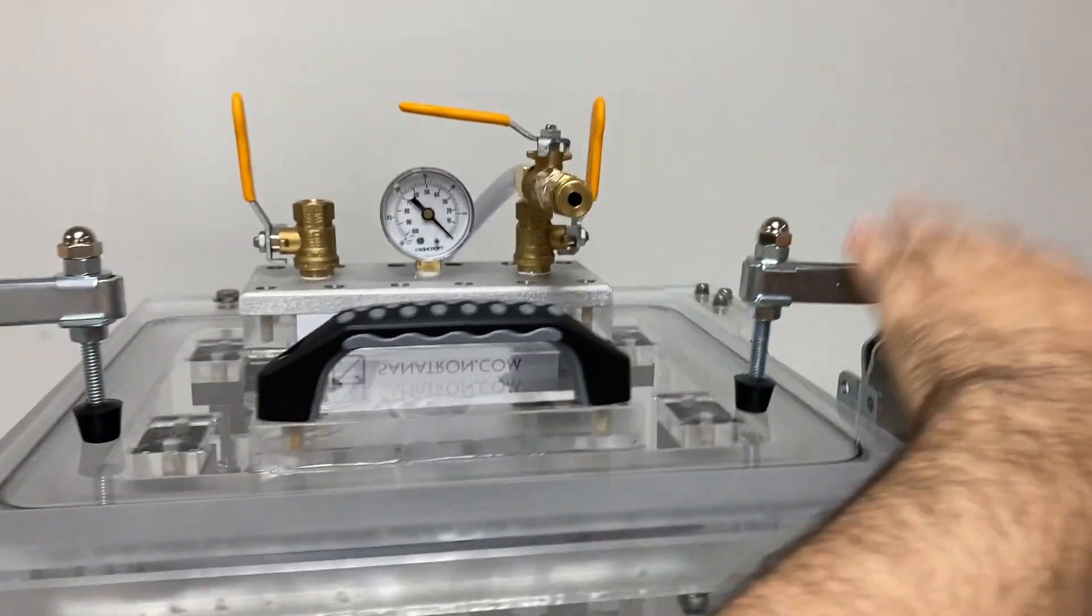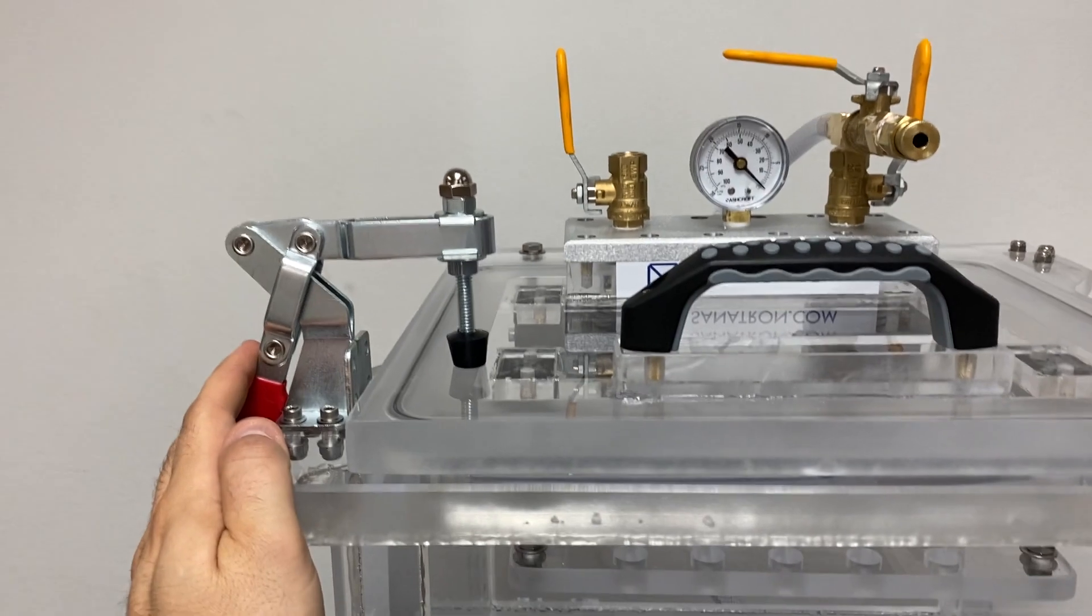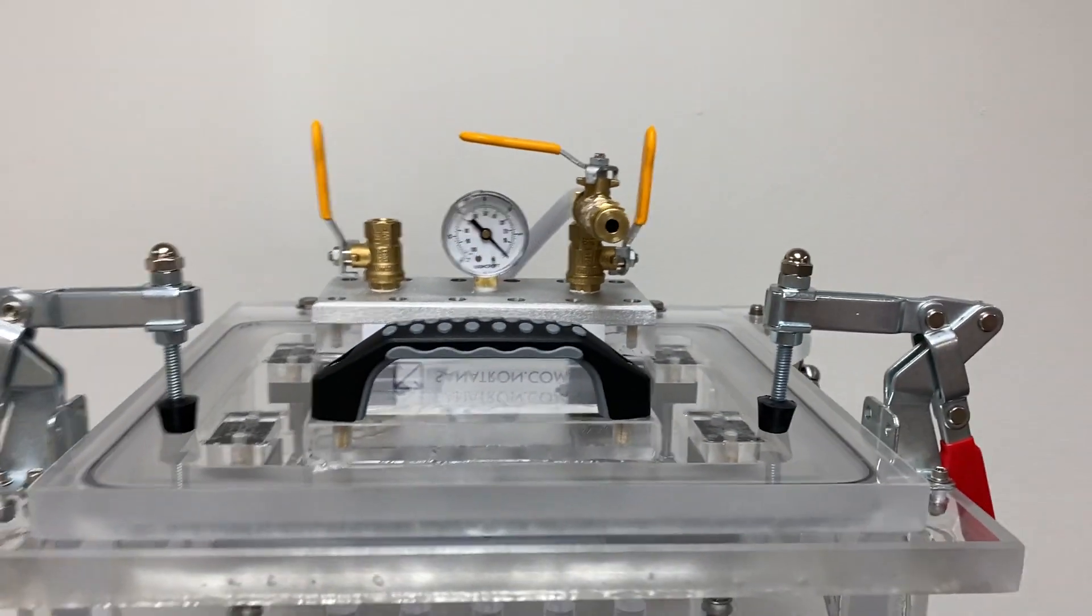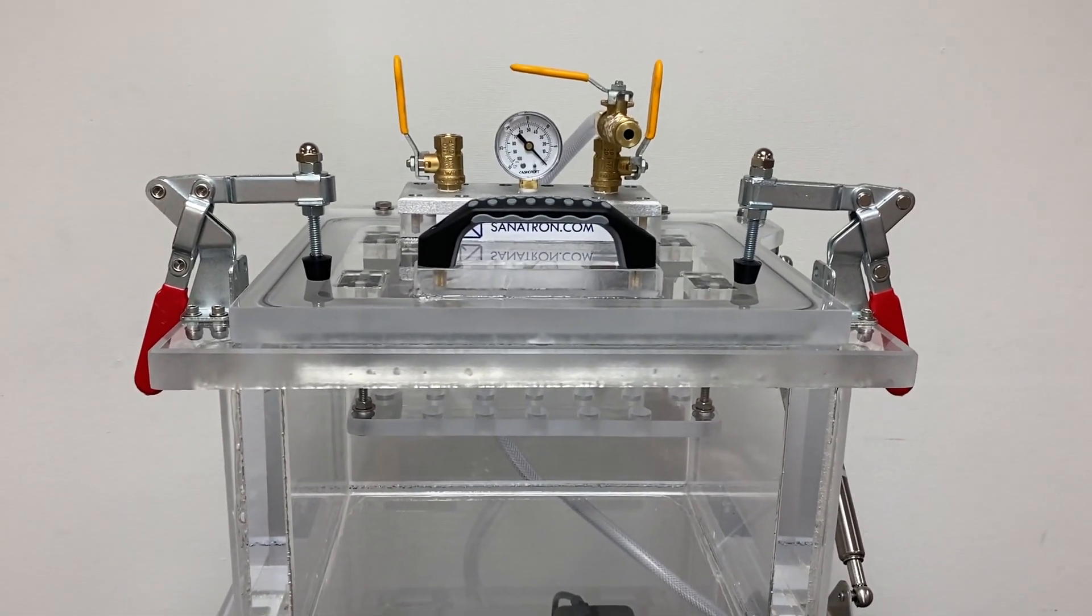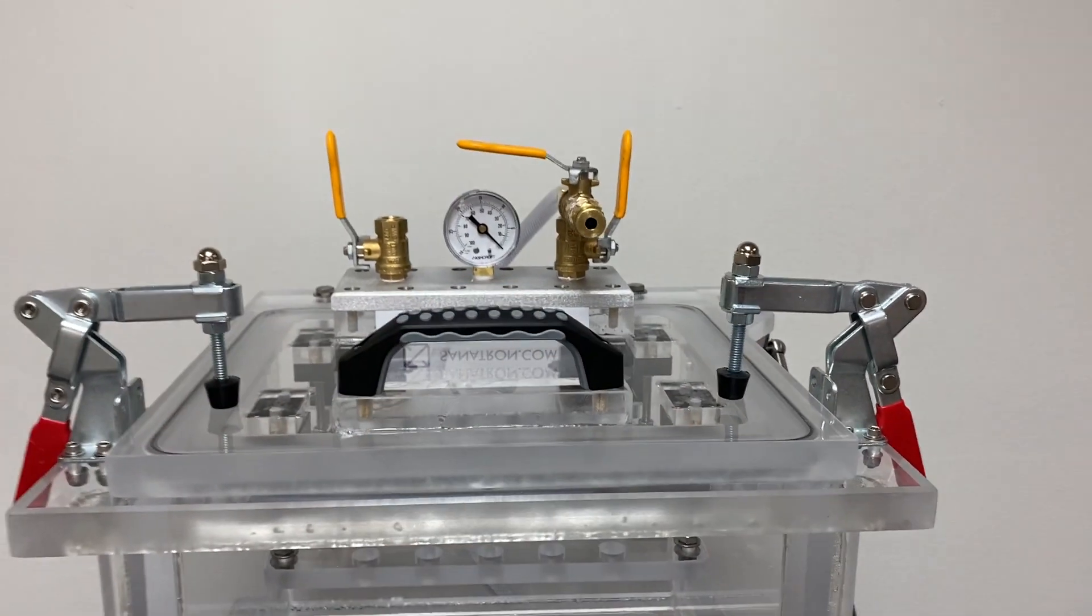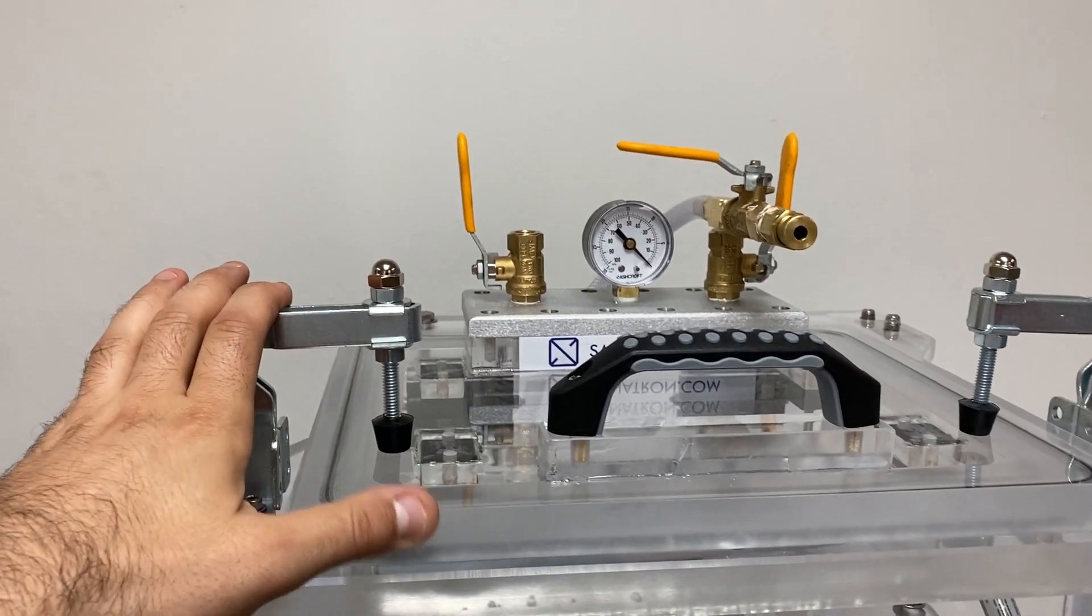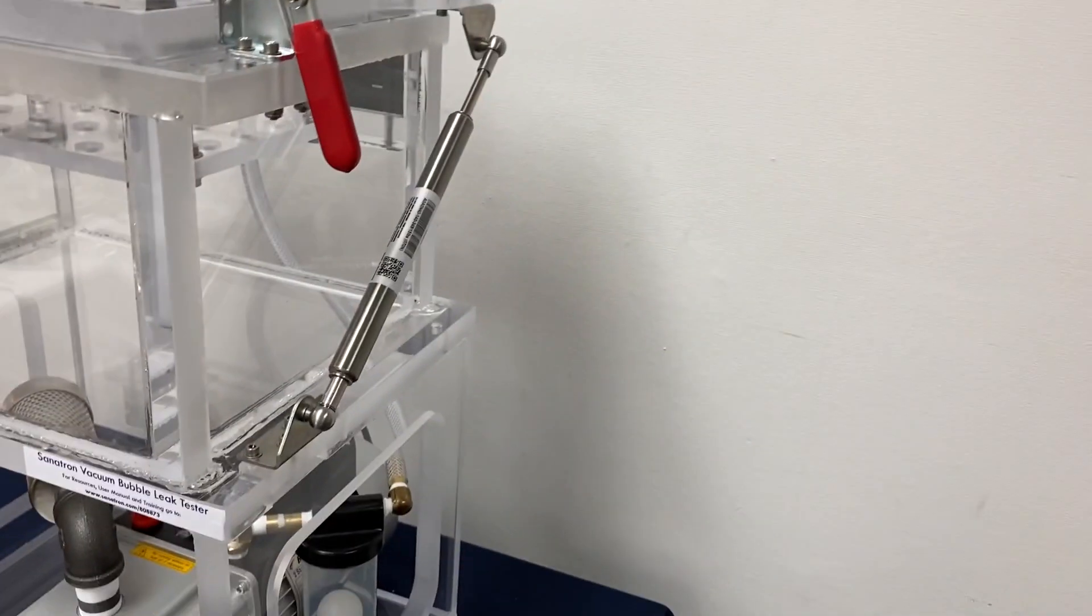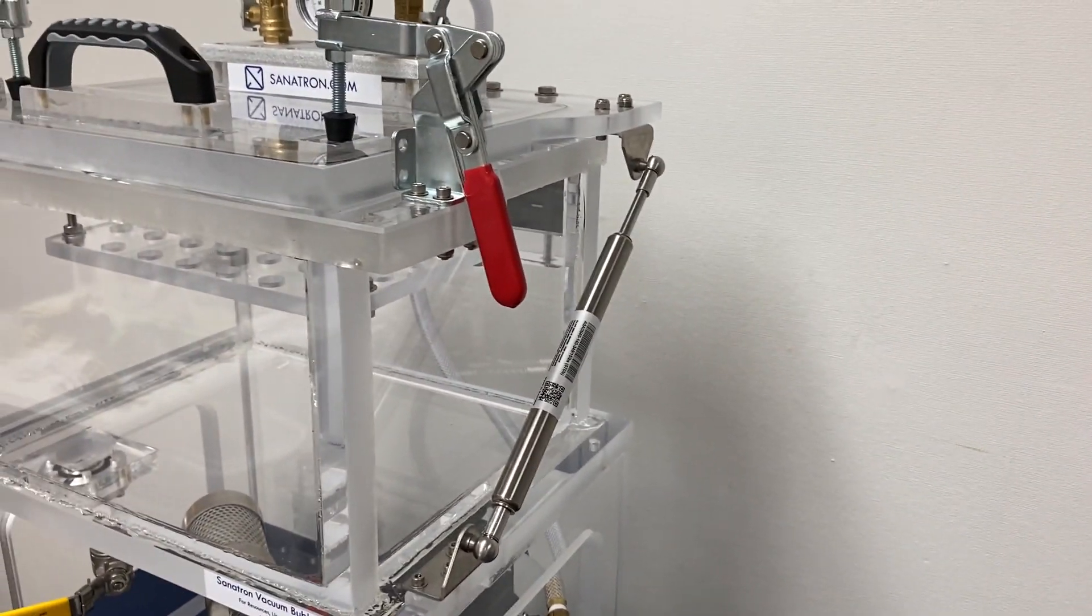This lid comes with two clamps. We like to have clamps so you don't have to be leaning onto the lid. You'll notice other bubble leak testers out there don't have these clamps, so you have to lean onto the lid and hold it to create vacuum. We didn't want to do that, so we're giving you two clamps, a handle, and on this side we have a gas spring that will keep the lid open so you can load your testing chamber with your test specimen.